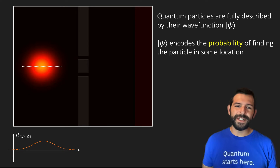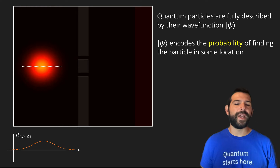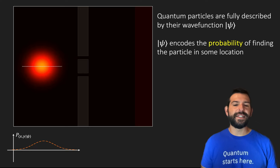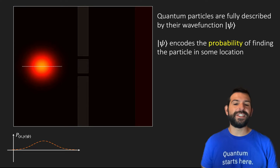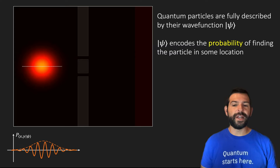The regions that are brighter correspond to locations where the particle is most likely to be found. This particular preparation of an electron is known as a Gaussian wave packet. But these details are not that important — what really matters is that the underlying wave function psi is a wave, and therefore it can interfere with itself.